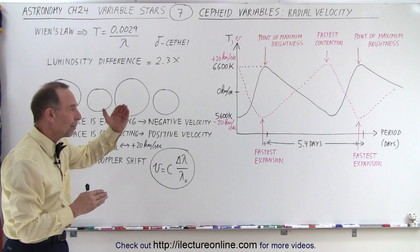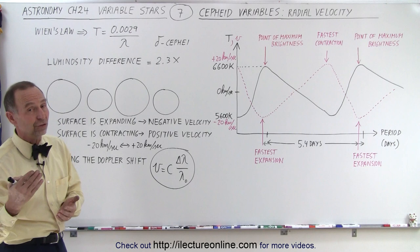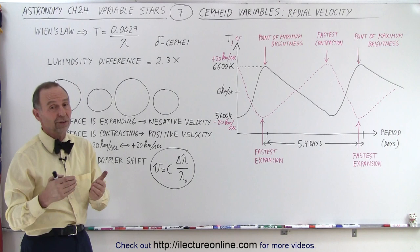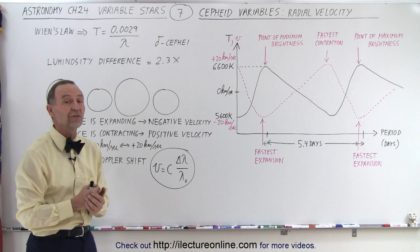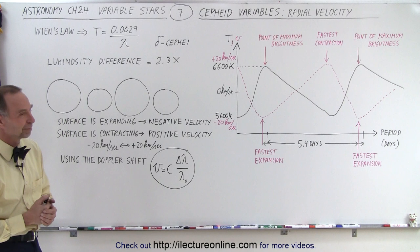And so by looking at the period of the star, we can know how bright the star actually is, measure how bright it appears to be, and from that we can figure out how far the star is, which is, of course, for astronomy, a key, key piece of information, because it's the most challenging thing to do in astronomy, is to find distances to things. And Cepheid variables help us do that. And this is how it's done.